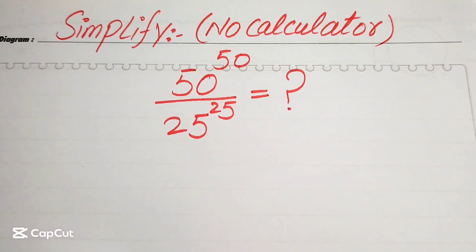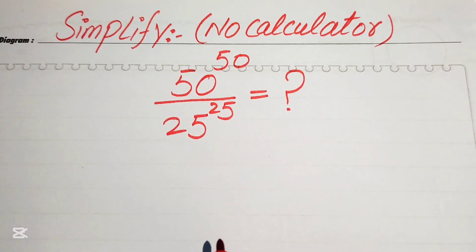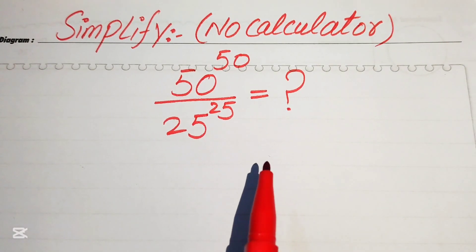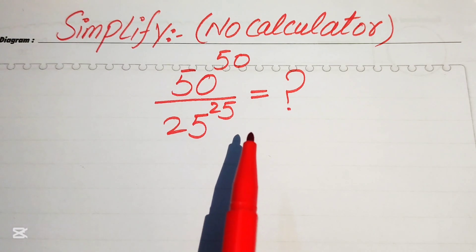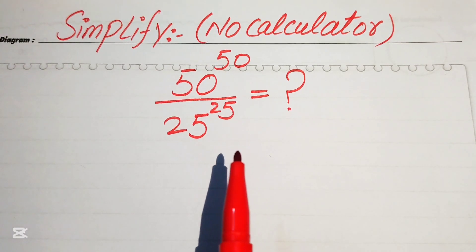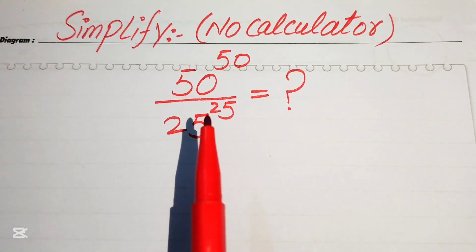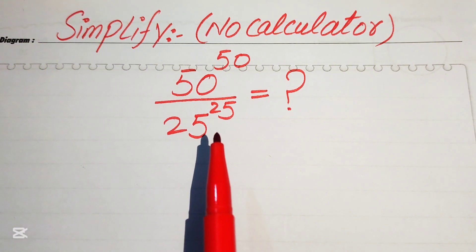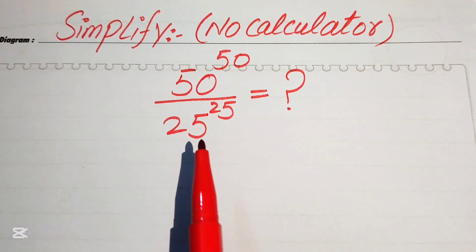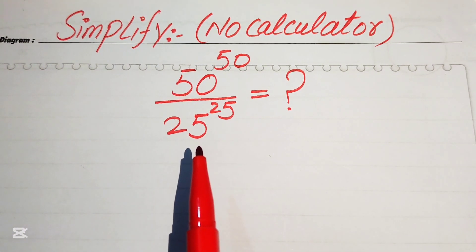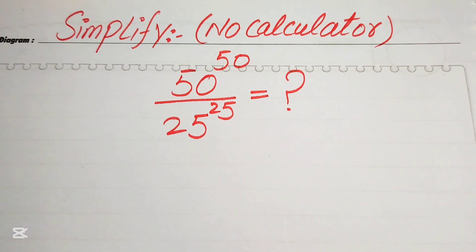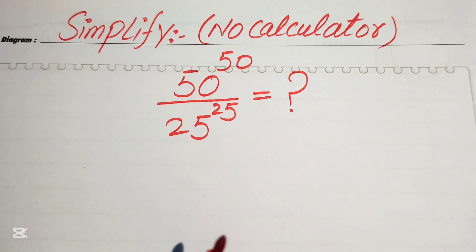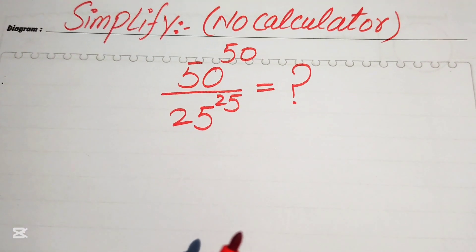Hello everyone. How to simplify this nice algebraic expression without using the calculator — calculator is not allowed in this problem. We have 50 to the power of 50 divided by 25 to the power of 25, and we write this into the lowest form.